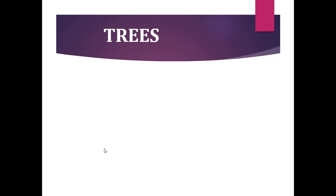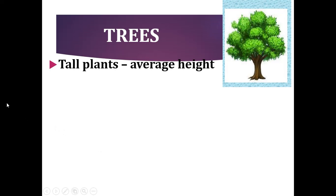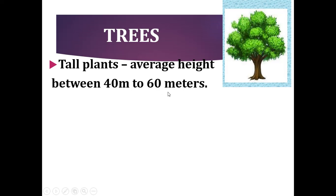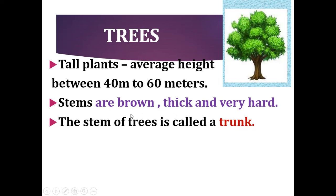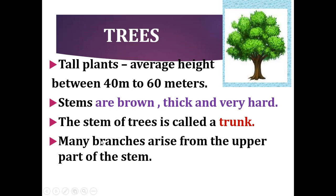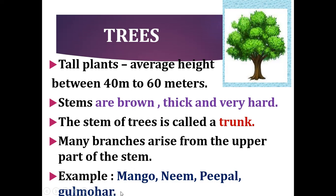Next is trees. Trees are tall plants having an average height between 40 to 60 meters. The stems of trees are brown, thick, and very hard. The stem of a tree is called a trunk. Many branches arise from the upper part of the stem. Examples of trees are mango, neem, peepal, and gulmohar.